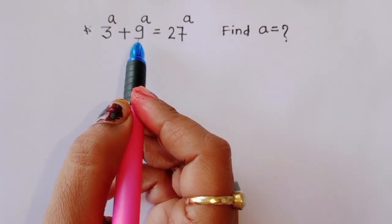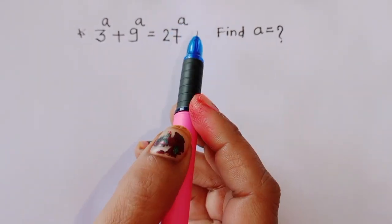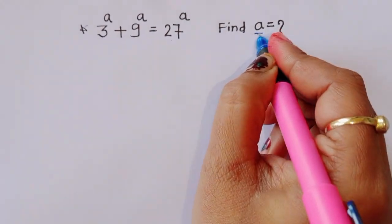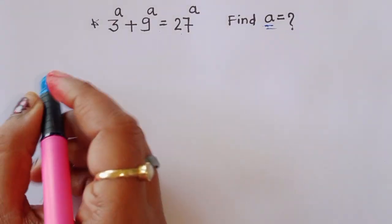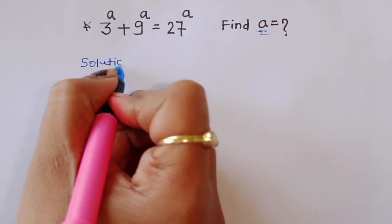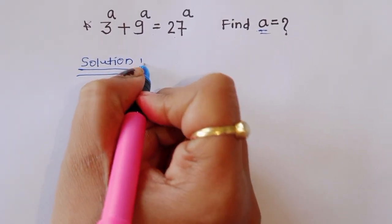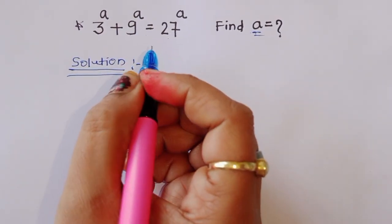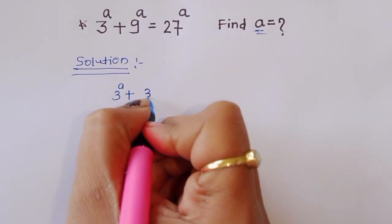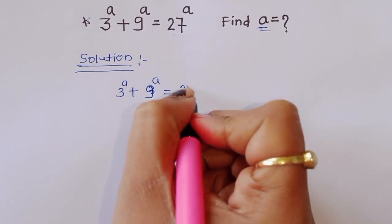Given 3 power a plus 9 power a is equal to 27 power a, we have to find out the value of a. Let's see the solution. We can solve this by using two methods. First method: 3 power a plus 9 power a is equal to 27 power a.